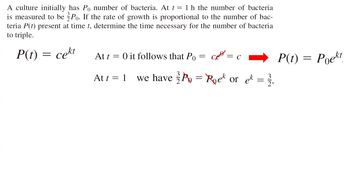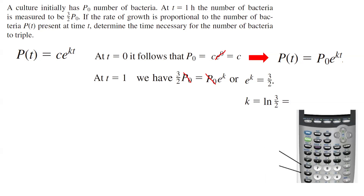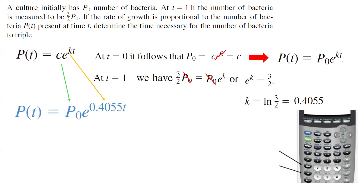To calculate k, we take the ln of both sides. The ln of e to the power k is k, and on the right-hand side you get ln of three halves. Using a calculator, ln of three halves gives approximately 0.4055. We have found k, so we can rewrite our function as p(t) equals p sub zero times e to the power 0.4055t.